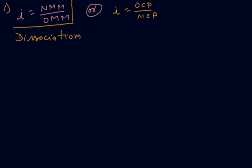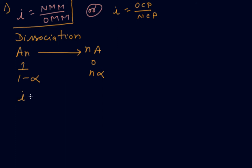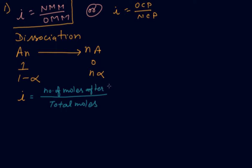Suppose dissociation takes place. A dissociates and gives n products. The initial concentration is 1 (and 0 for products). It breaks down: at equilibrium we have (1 - α) for A, and nα for products. The formula for i is: total moles after dissociation divided by total moles before dissociation.